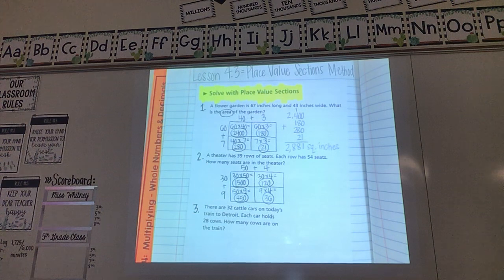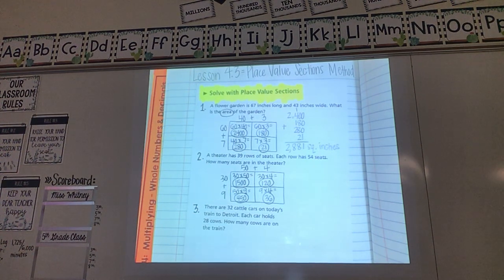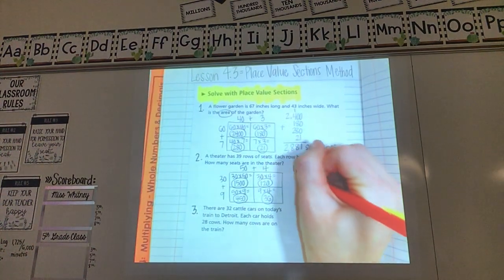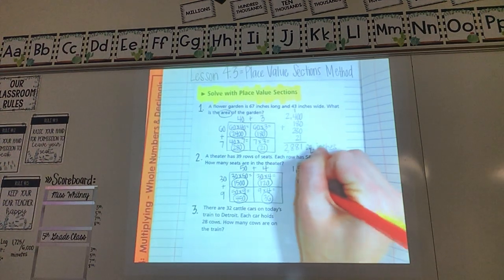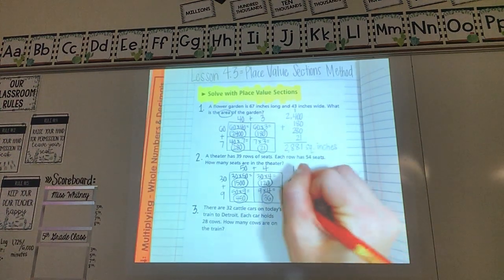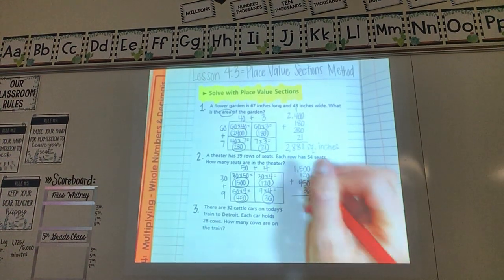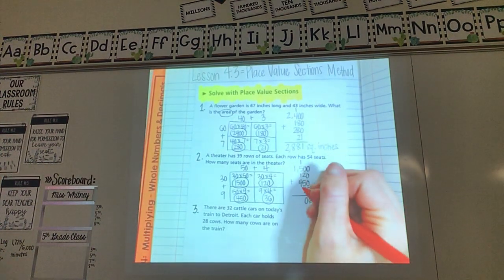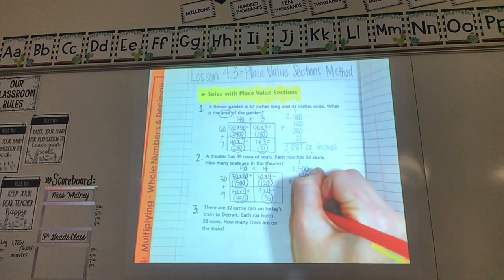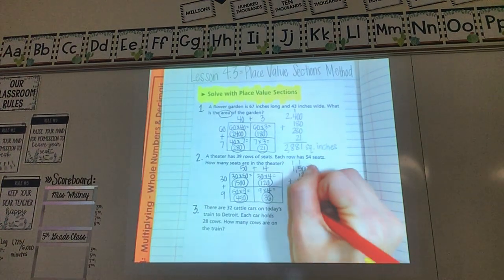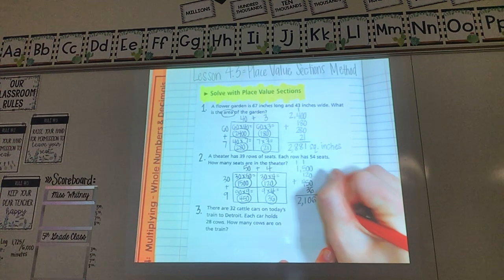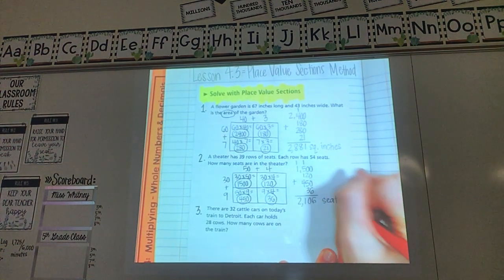Now I have all four of my boxes but I'm not done yet. What is my final step to get my answer? Add all of that together. So 1,500, 120, 450, and 36. Make sure we stack them up nicely so that I can easily tell when I'm adding. That would be a 6. That would be a 10. So put my zero. Carry my one. That would be an 11, 7. Put my one. Carry my one. And one and one would be two. So 2,106. Then I just have to find my label. What would my label be on this one? Seats. There are 2,106 seats in this movie theater.